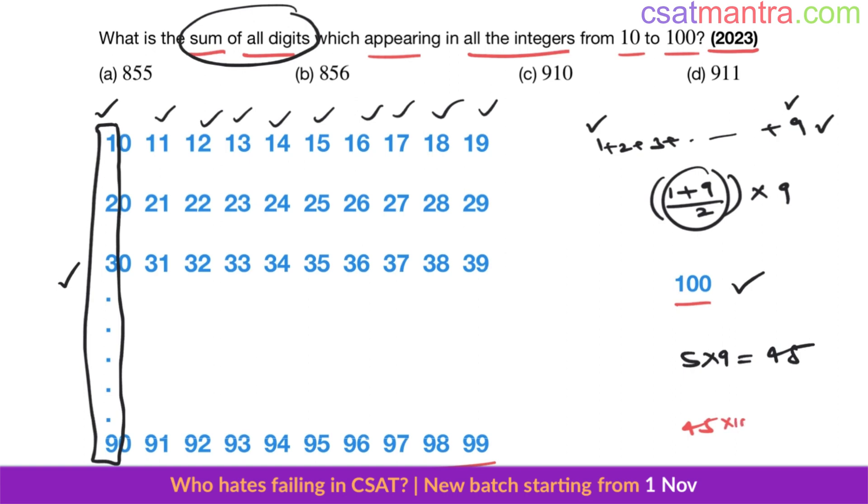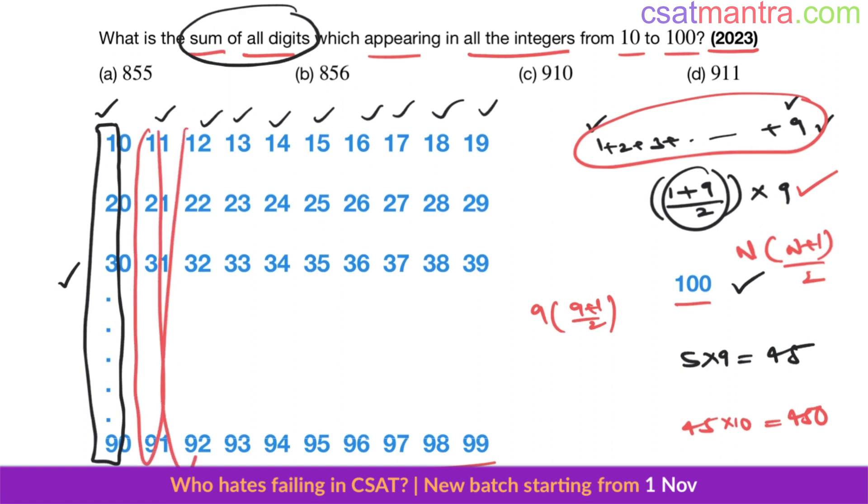Else you can make use of the formula of sum of first n natural numbers: that is n into n plus 1 by 2. 9 into 9 plus 1 by 2, same here. So the sum of all these digits in tens place is 450.